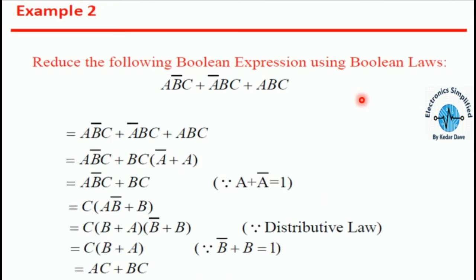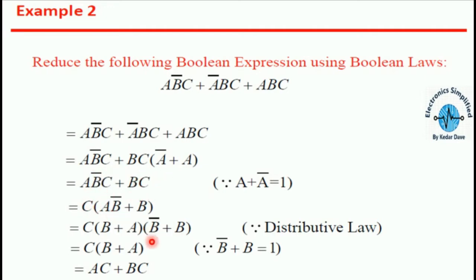Let's take another example: ab̄c + ābc + abc. Here you can see that ab̄c + bc simplifies, because ā + a equals 1. Hence 'c' is taken common from the equation and then we use the distributive law. We get the result: ac + bc.